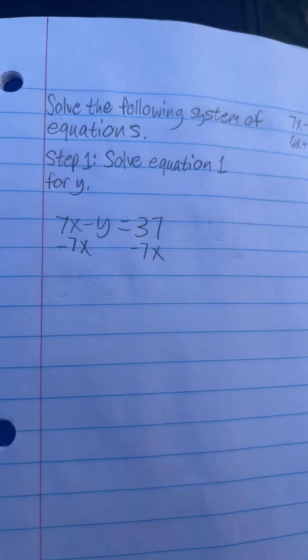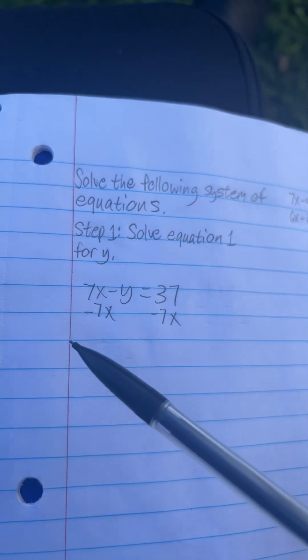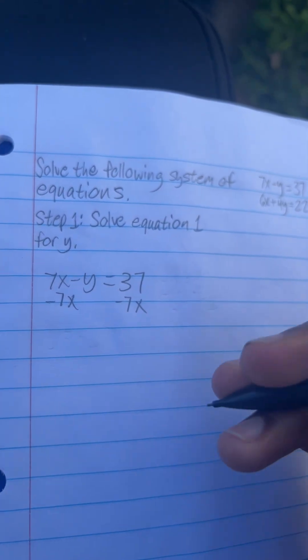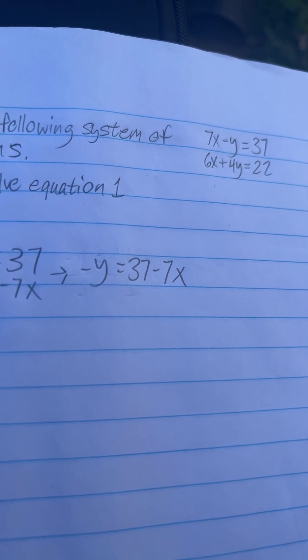Step 1 is to solve equation 1 for y. 7x minus y equals 37, and we're going to subtract. We're going to subtract negative 7x on both sides to isolate y. So we got negative y is equal to 37 minus 7x.